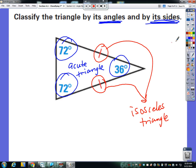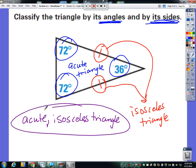We can put all of this together and call it an acute, isosceles triangle. So a triangle can have two names. One name is for its angle, and the other name is for its side length.